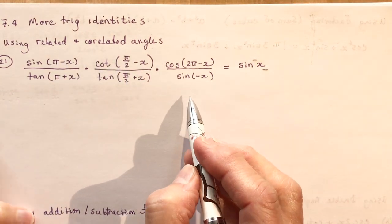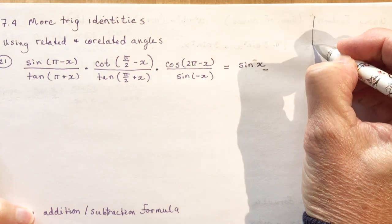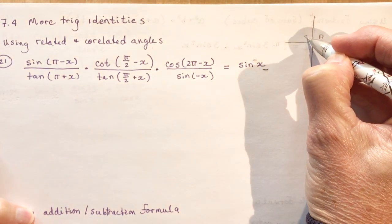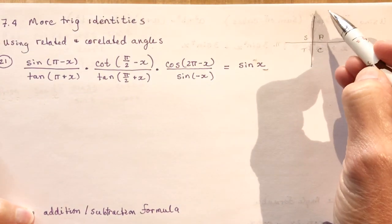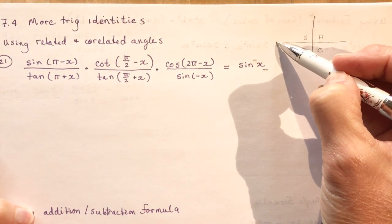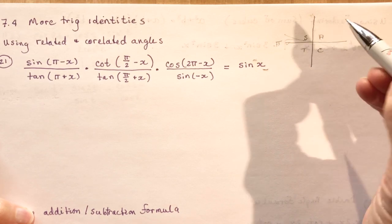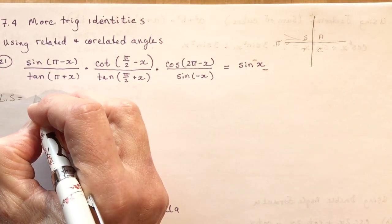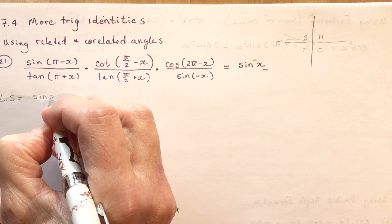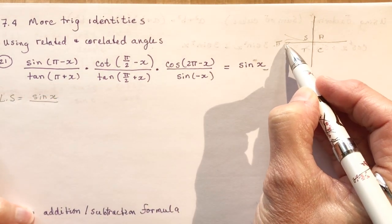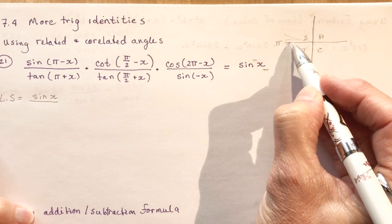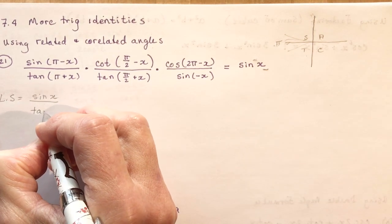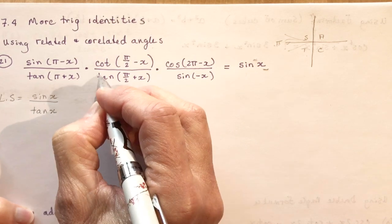The first question uses related and correlated angles. For the sine of (π − x), we need to make a quick sketch with our CAST rule to figure out where we are. The sine of (π − x) is just sin(x). The tan of (π + x) — tan is positive there — so that's just tan(x) times...